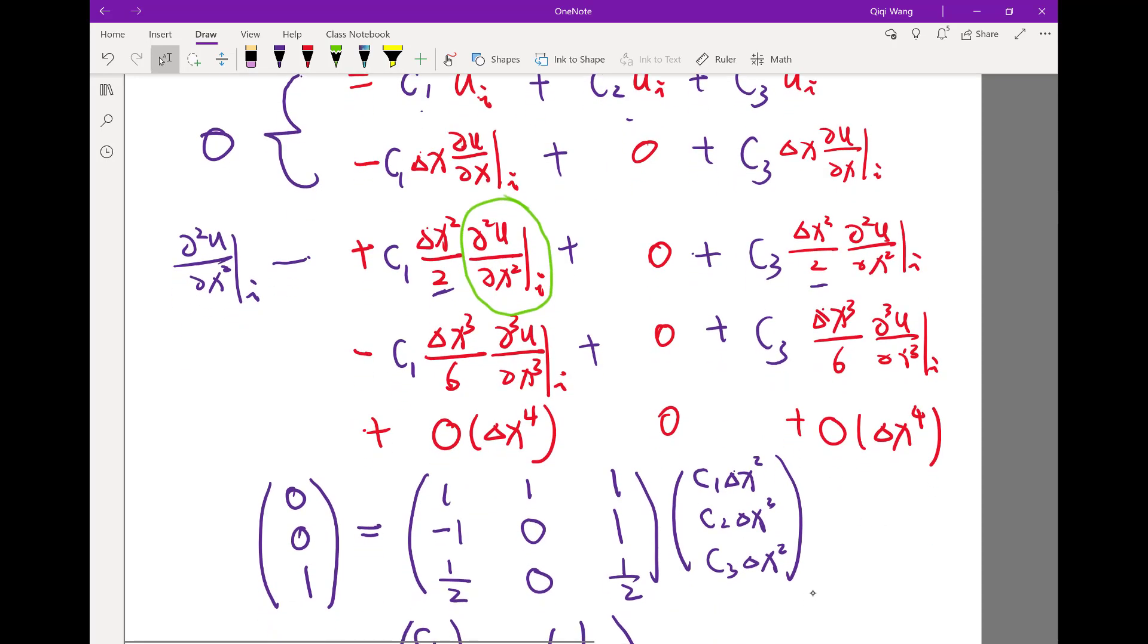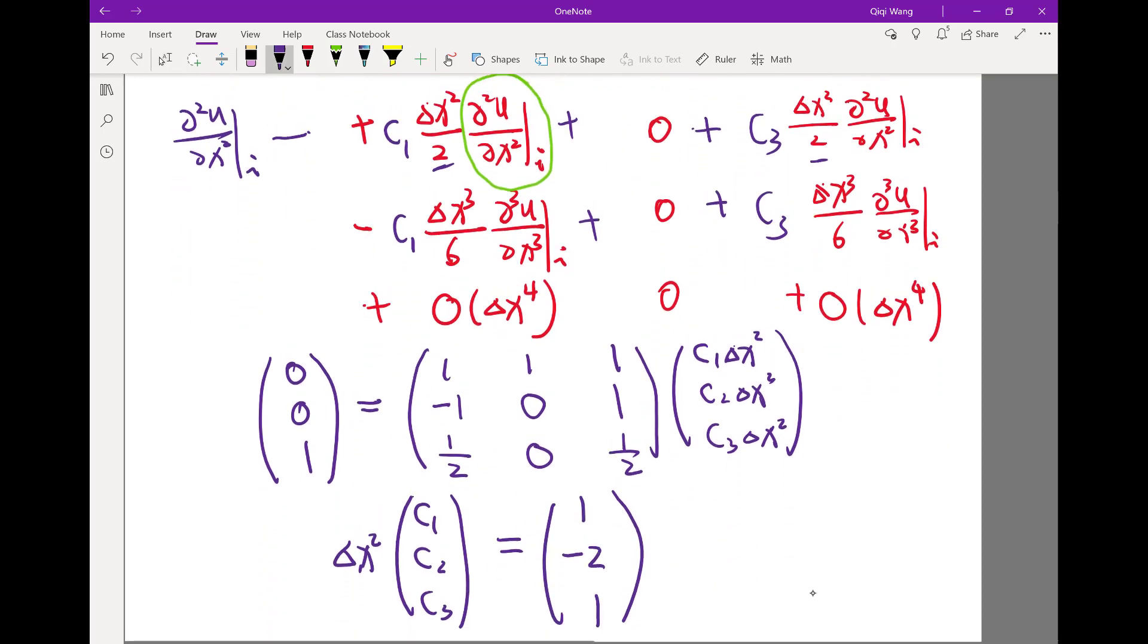Okay, so coincidentally because C1 is equal to C3, this row actually gets cancelled out. C1 equal to C3. So I mean this is not by design, but just by pure luck I get a scheme that is more accurate than I aimed for. That's actually something good about the second order derivatives.